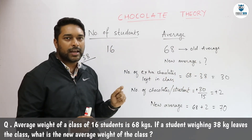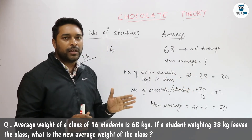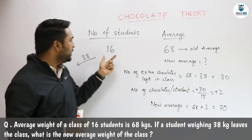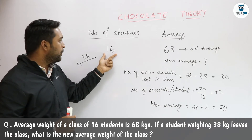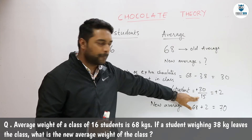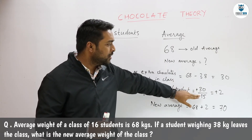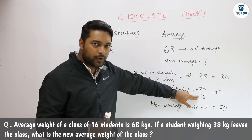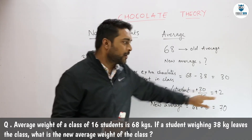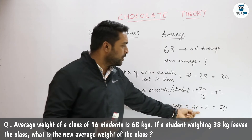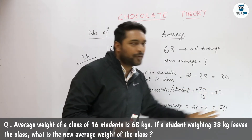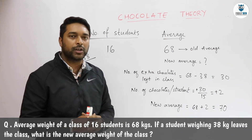These 30 extra chocolates will be equally distributed among the remaining students. Earlier there were 16 students; one has already left, so the number of students now in the class is 15. So 30 extra chocolates distributed among 15 students means each of them will get 2 chocolates. Earlier they had 68 chocolates; now they will get 2 chocolates more, so they will have 70 chocolates — which will be our new average.